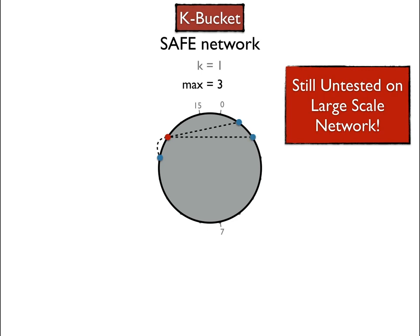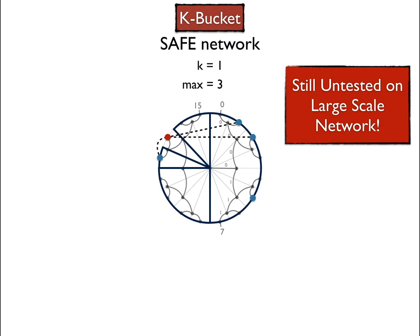Now that we've reached the maximum number of nodes in our routing table, we'll then use the K bucket structure to decide whether to add other nodes in it or not. So if a fourth node shows up, we'll look at the bucket structure and find out that the bucket further away from us is already full and overflowing, so that node will be refused. But if another node were to show up in the bucket closer to us, which is not already full, then the node will be added.